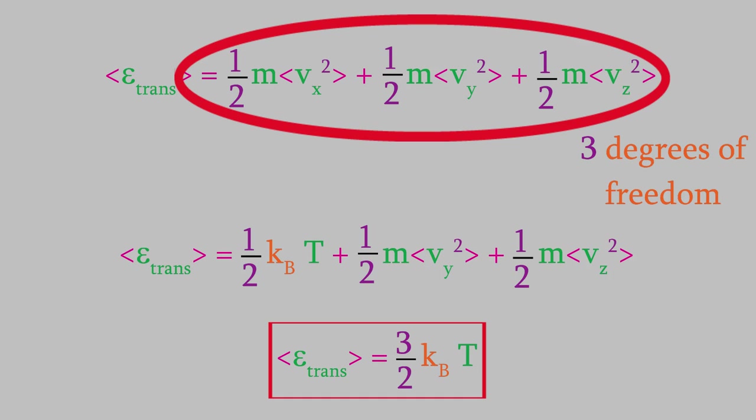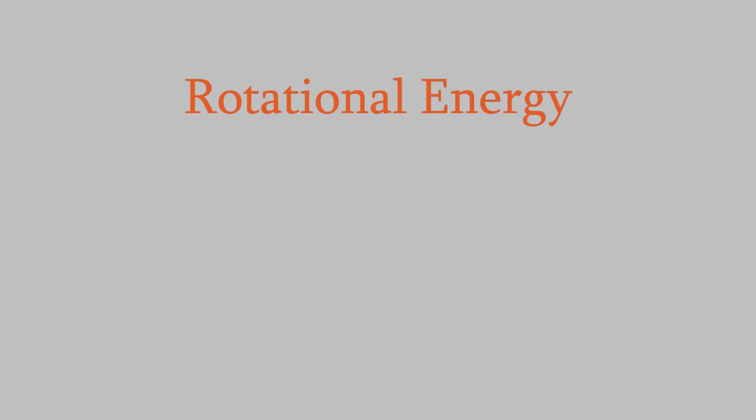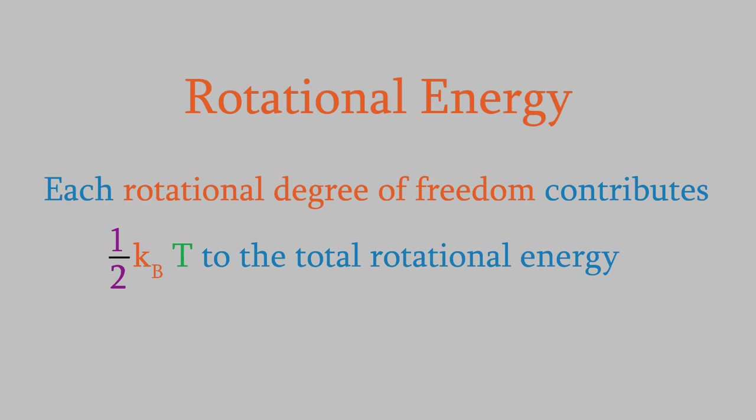That's all for the translational energy. And it turns out that the rotational energy behaves similarly. Just like the translational energy, each rotational degree of freedom contributes one half kb times t to the overall rotational energy. And how many rotational degrees of freedom are there? We'll talk about that in the next video. There are always 3 degrees of freedom for translational energy, but the number of rotational degrees of freedom depends on the structure of the molecule.